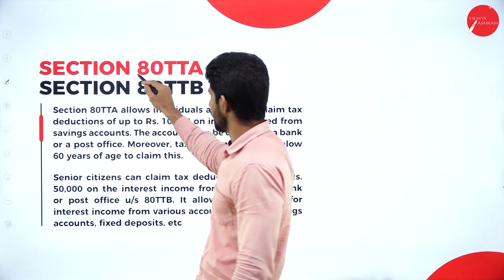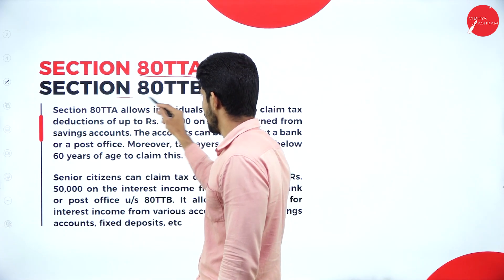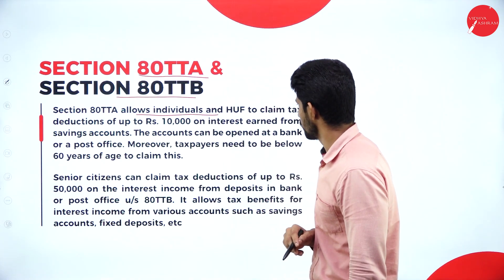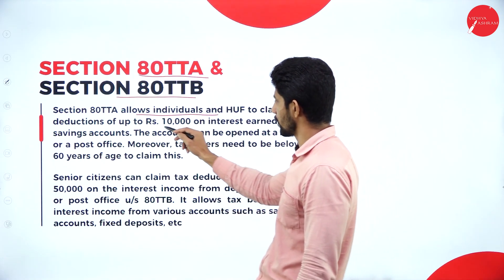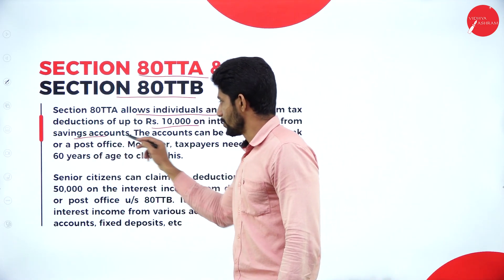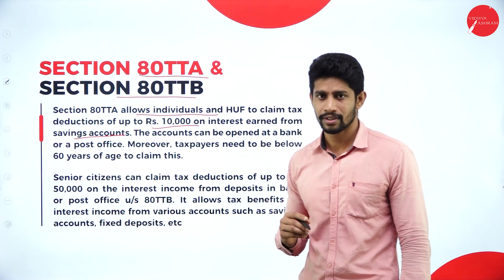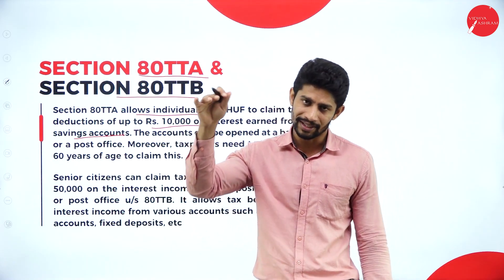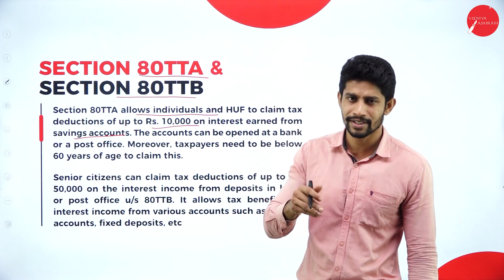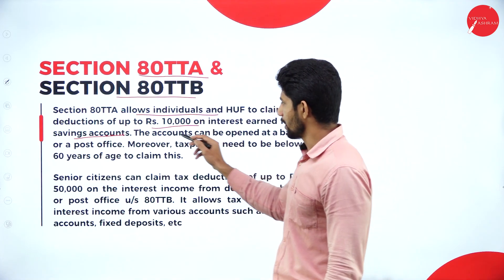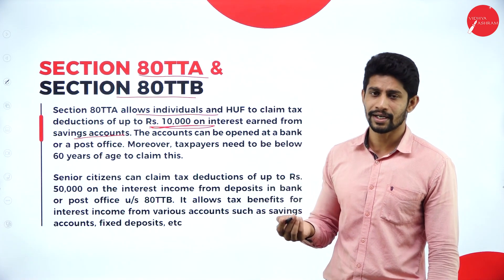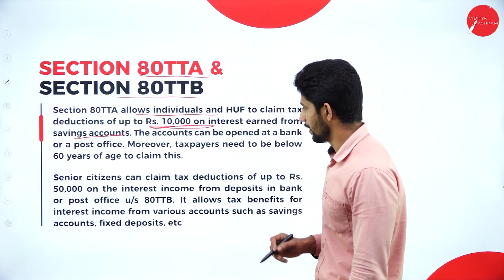Next, Section 80TTA and Section 80TTB. Section 80TTA allows individuals and HUFs to claim tax deductions of up to 10,000 rupees on the interest earned from savings accounts. If you have a savings bank account with any bank and are earning interest on deposits in that savings bank, up to 10,000 rupees of interest can be claimed as deduction under Section 80TTA.